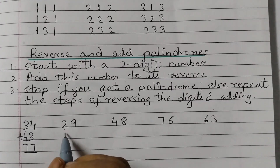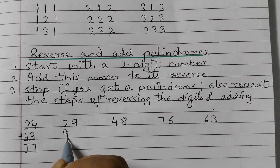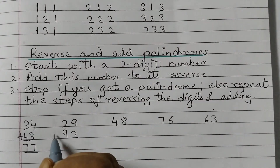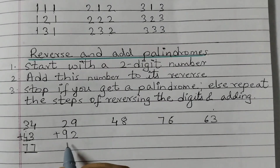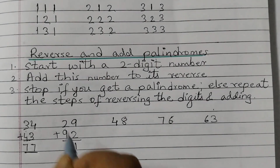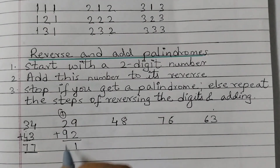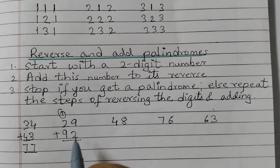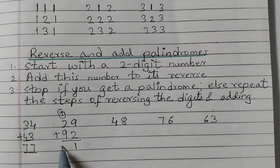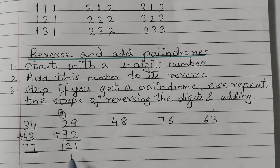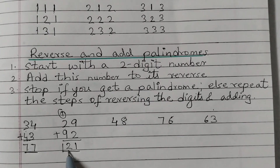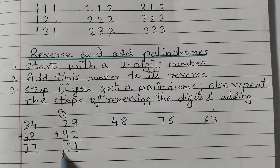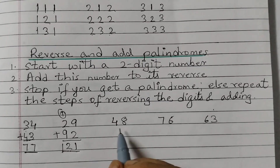Next, 29. Its reverse is 92. 9 plus 2 is 11, and 9 plus 2 gives us a carry — result is 121. So 1, 2, 1 — again a palindrome.